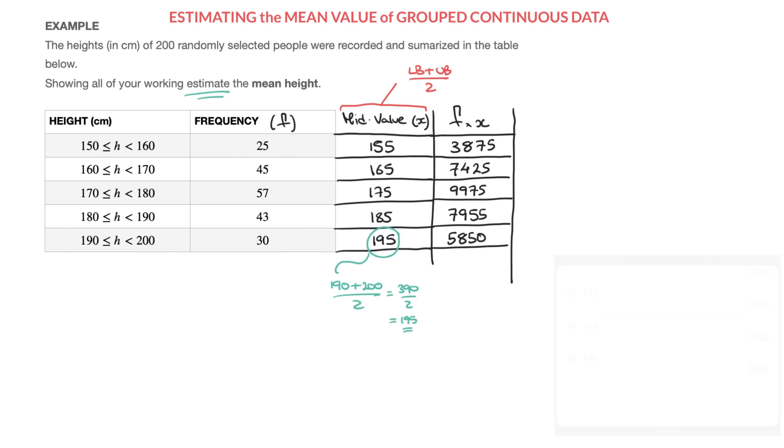All right, now at this stage, we are ready to estimate the mean. And for that, the formula we'll use states that the mean value, so x with the bar on top, is equal to the sum of all the f times x's divided by n.